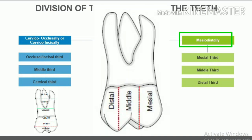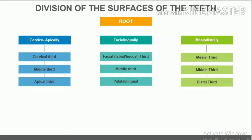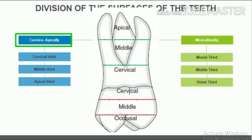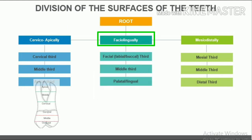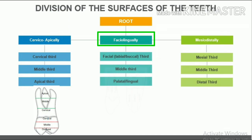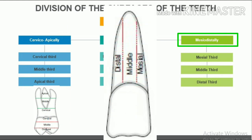Mesiodistally, the facial and lingual or palatal surfaces of the crown are divided into: mesial third, middle third, and distal third. The root can similarly be divided into thirds. Cervico-apically: cervical third, middle third, and apical third. Facio-lingually: facial (labial or buccal) third, middle third, and palatal or lingual third. Mesiodistally: mesial third, middle third, and distal third.